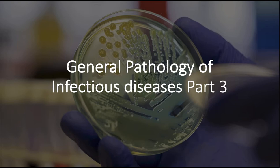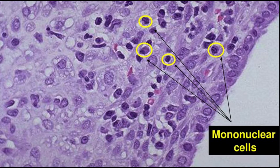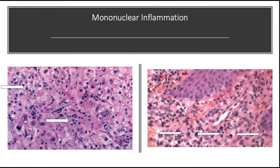Suppurative inflammation was discussed earlier. Diffuse predominantly mononuclear interstitial infiltrates are a common feature of all chronic inflammatory processes, but sometimes they appear acutely in response to viruses, intracellular bacteria or intracellular parasites. In addition, spirochetes and some helminths also provoke chronic inflammation, and eosinophils can be prominent with some helminthic infections. Which mononuclear cell predominates within the inflammatory lesion depends on the host immune response to the organism.